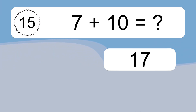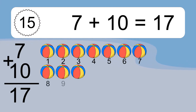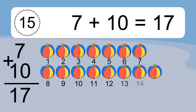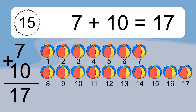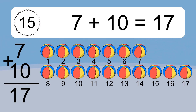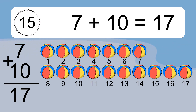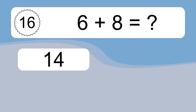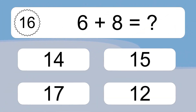7 plus 10 equals what? Seven plus ten equals seventeen. Let's count it: one, two, three, four, five, six, seven, eight, nine, ten, eleven, twelve, thirteen, fourteen, fifteen, sixteen, seventeen.